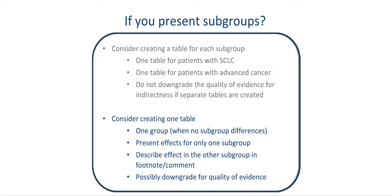If one table is considered — suggested by the lack of important subgroup differences, no interaction, and no important heterogeneity — one may present effects for both subgroups together, or present effects for one subgroup only and indicate effects for the second subgroup in a separate footnote. If there are important subgroup effects or the evidence is not direct enough to apply to all patients, then one would possibly downgrade the quality of evidence. The example provided here shows that judgment is required, as there is no clear indicator that the effect truly differs between groups. The next example provides perhaps clearer evidence for different effects in different populations or settings.